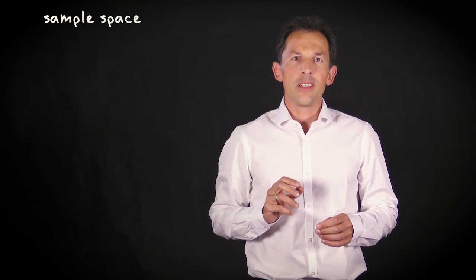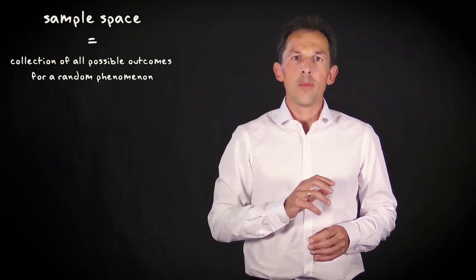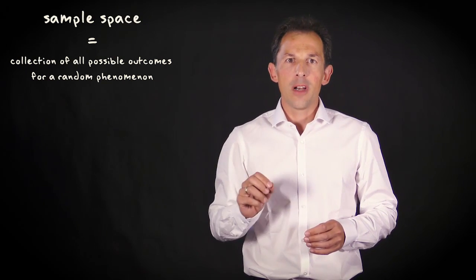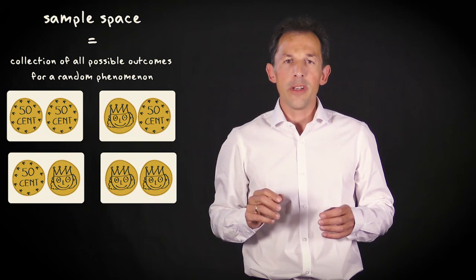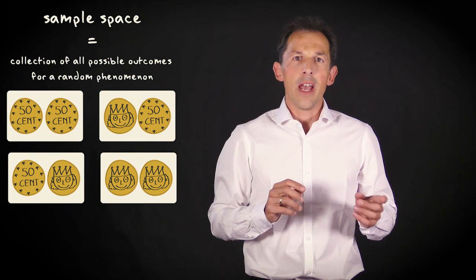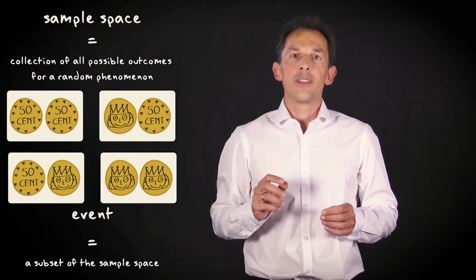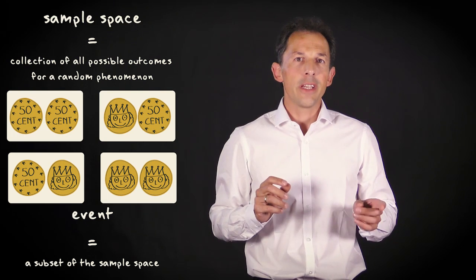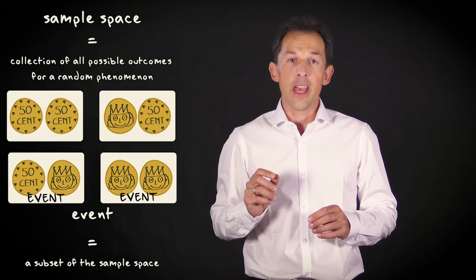A sample space is the collection of all possible outcomes for a random phenomenon. For example, these four possible outcomes of tossing a coin two times. And an event is a subset of the sample space. For example, the cases where your last coin toss would result in heads.